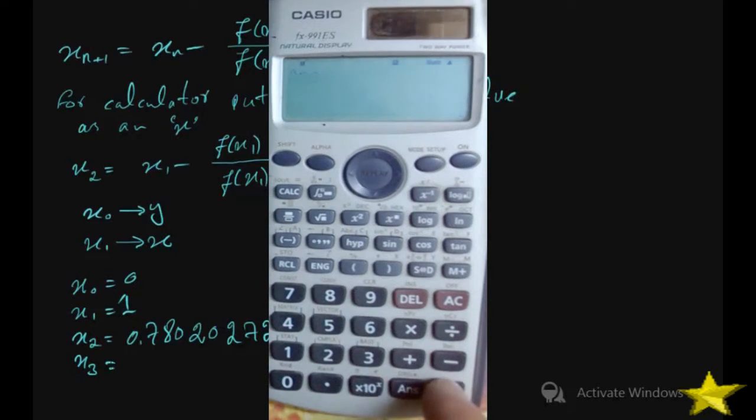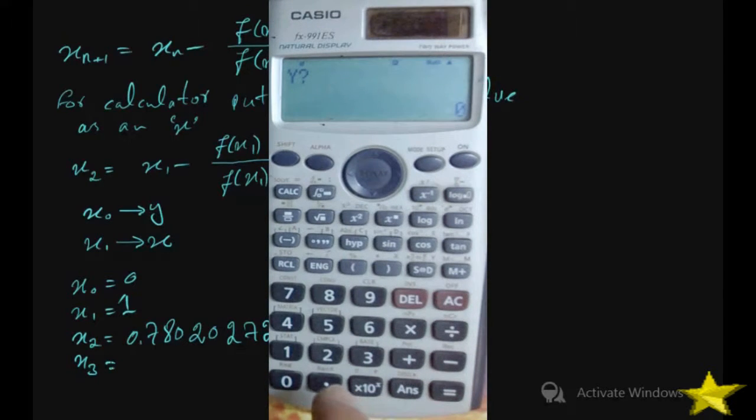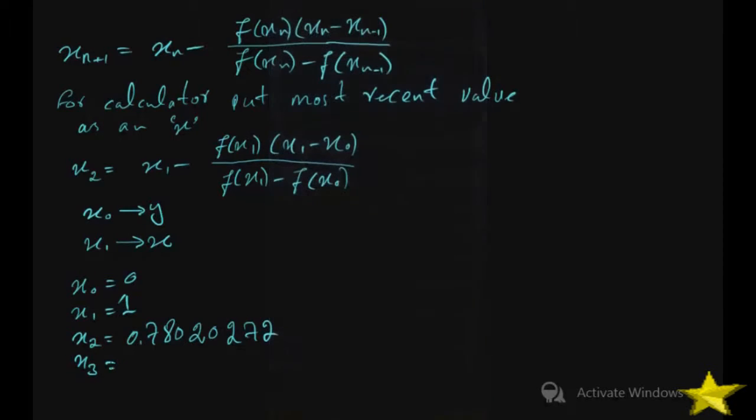For the second iteration, go back to the equation, press calc, enter Ans for x (the recent value x2), and for y enter 1. We get 0.9028667356.